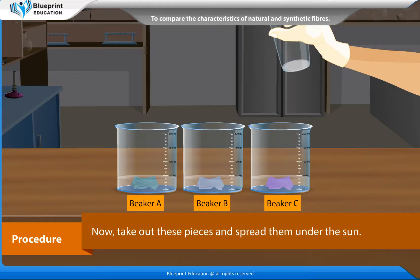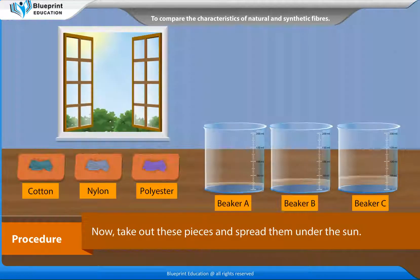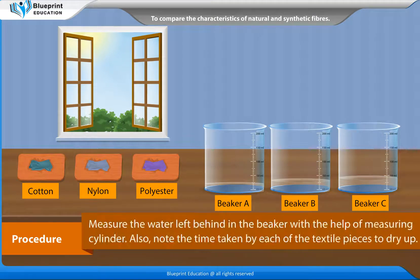Now take out these pieces and spread them under the sun. Measure the water left behind in the beaker with the help of a measuring cylinder. Also, note the time taken by each of the textile pieces to dry up.